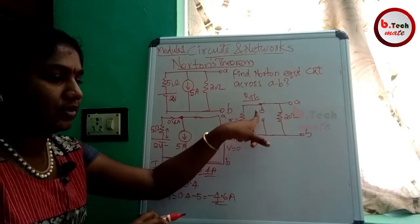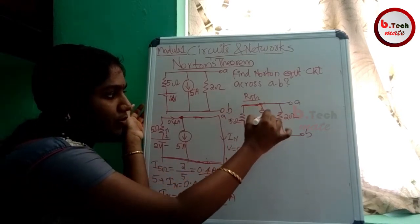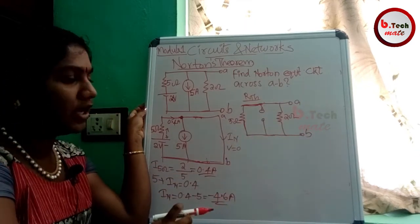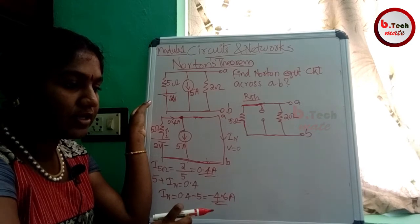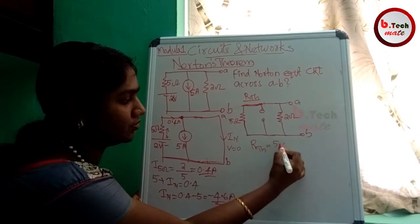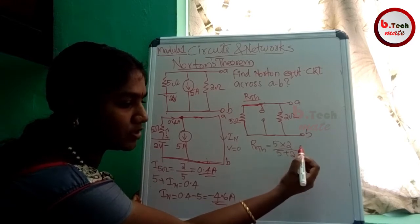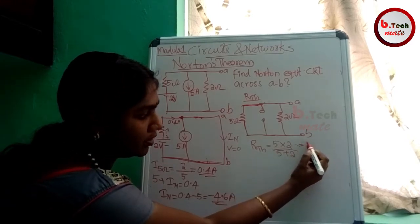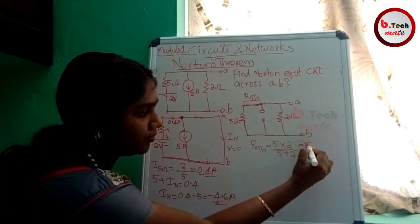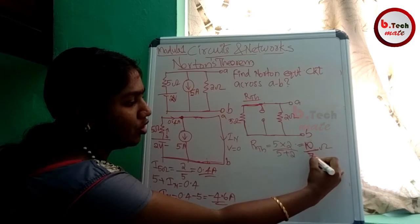Current source, 5 is equal to 2. This is equal to 5. Now total resistance is equal to 5 into 2 divided by 5 plus 2. That is 10 by 7 ohms.